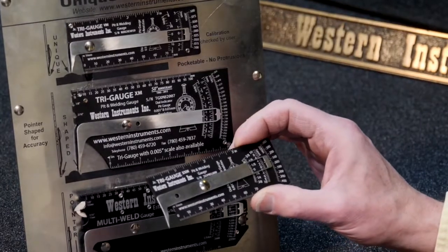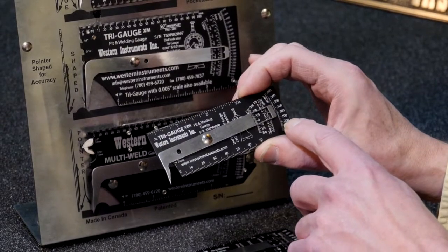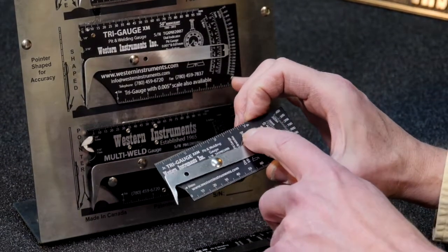Or you can have the junior tri-gauge XXM, twenty thou accuracy, but with four hundred thou range.